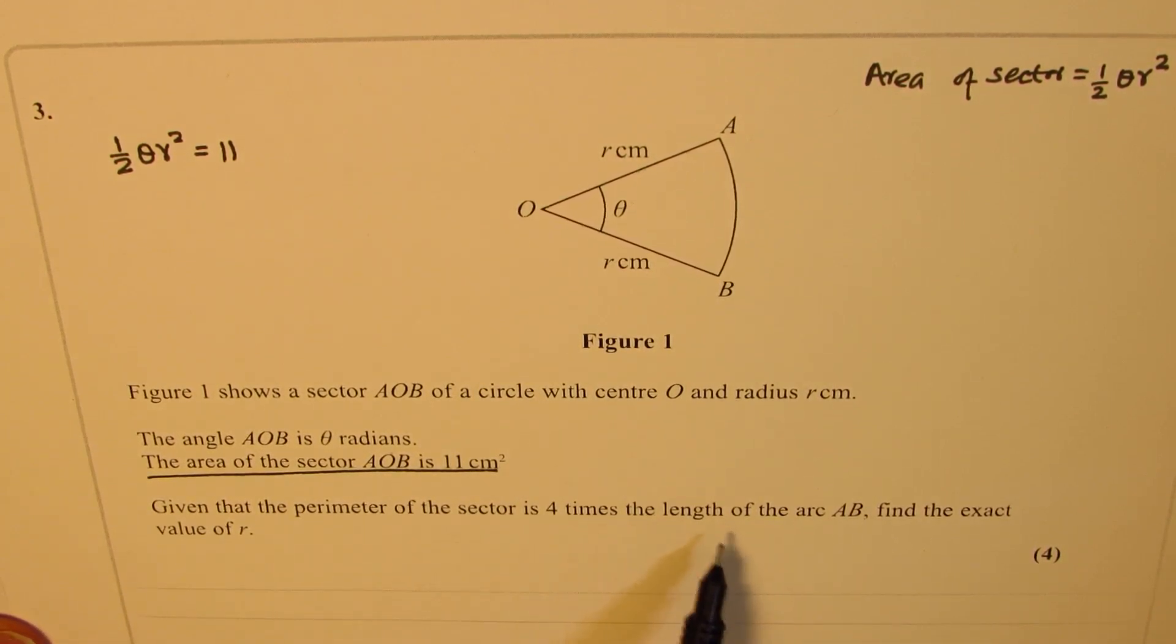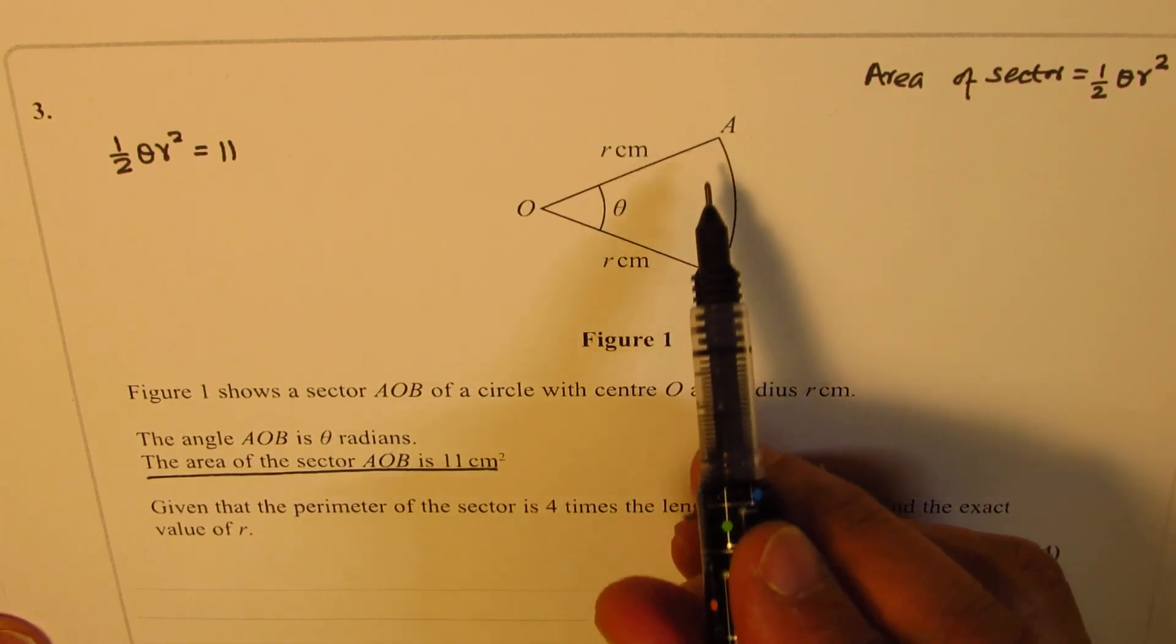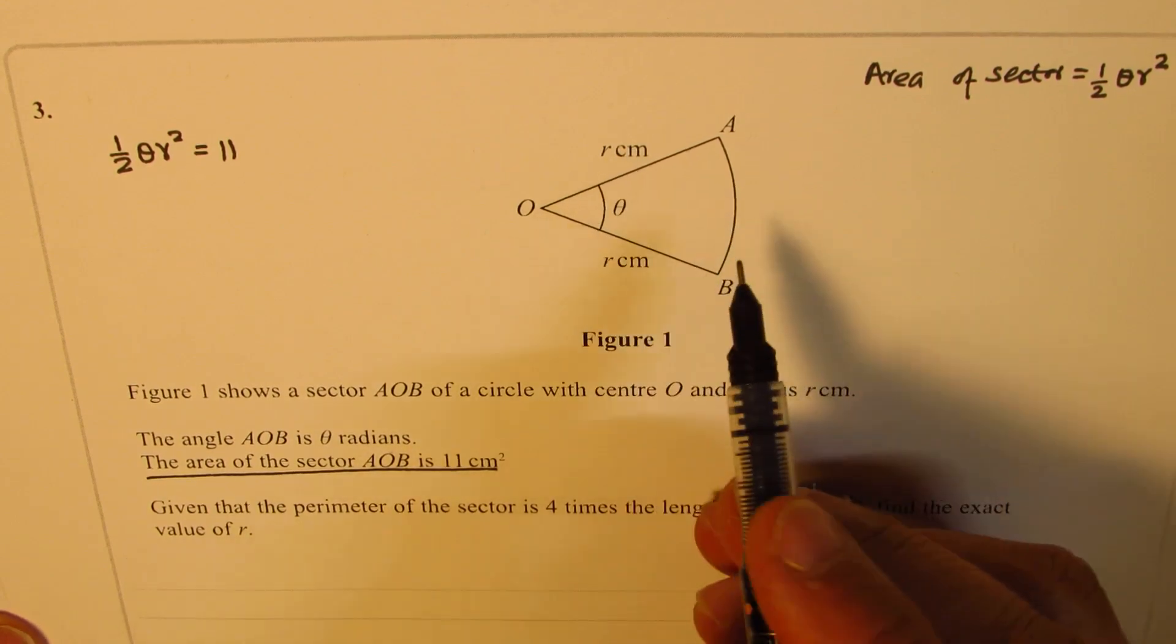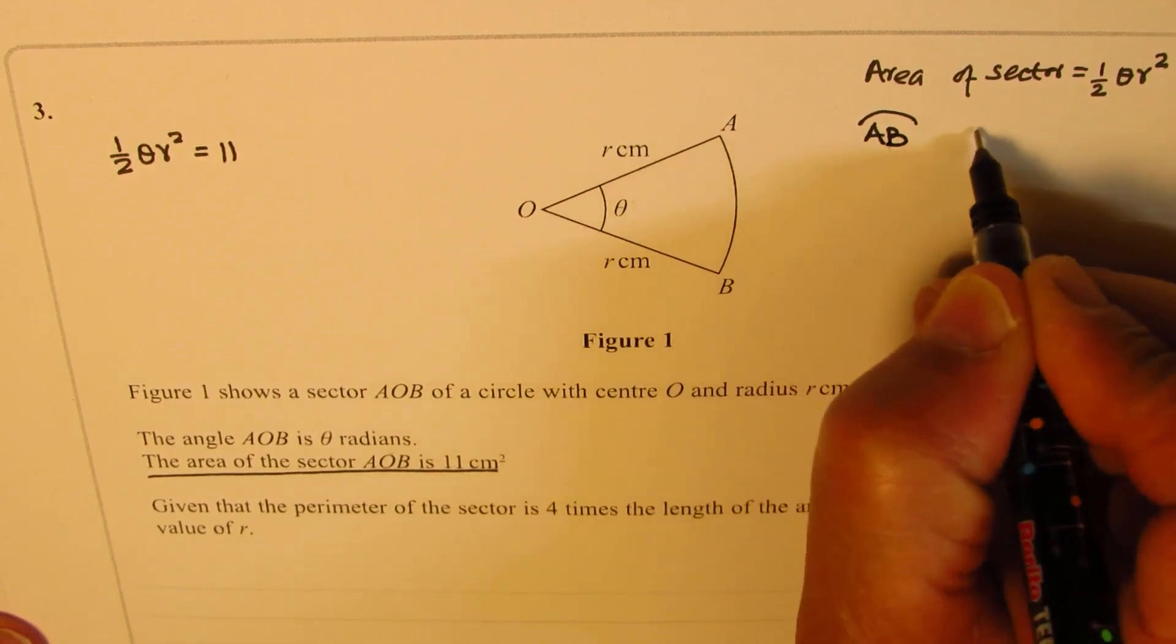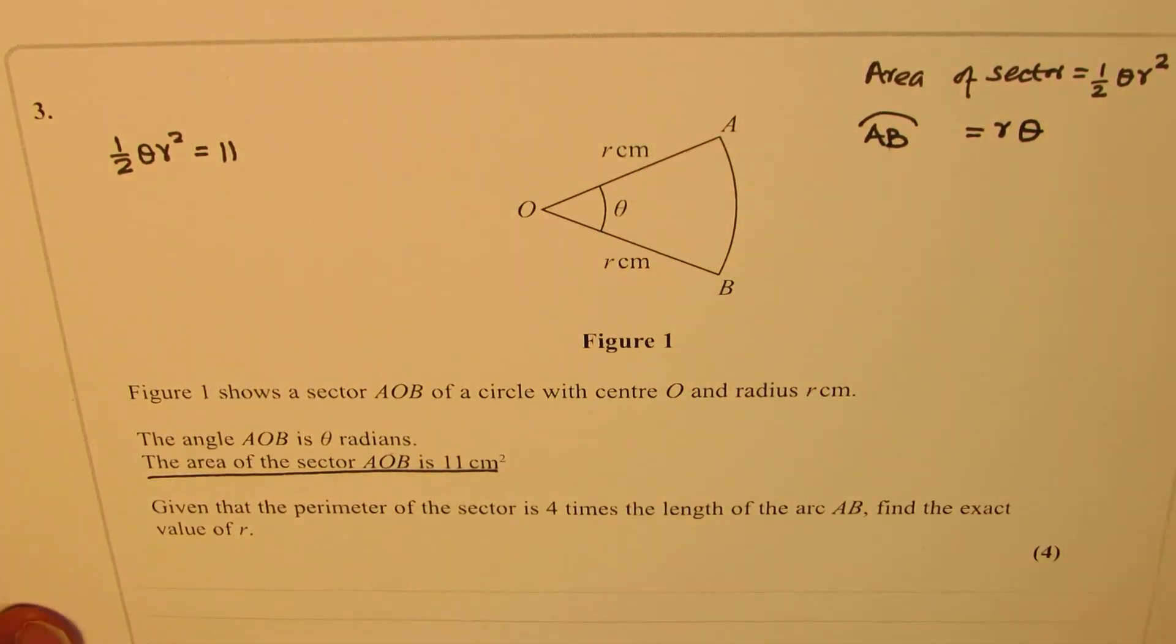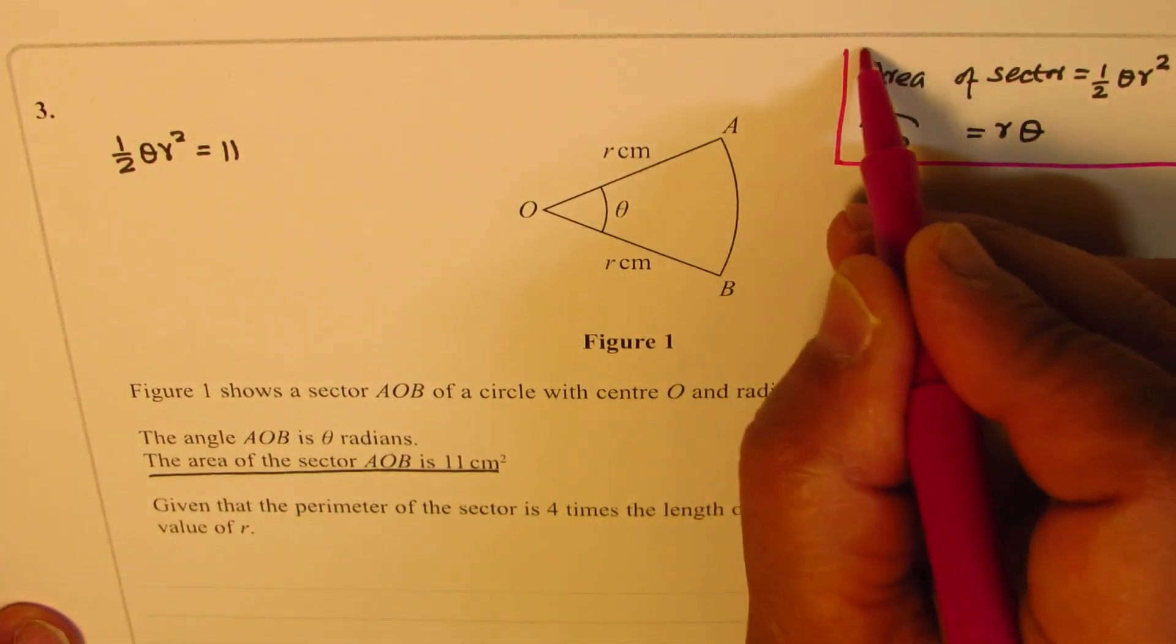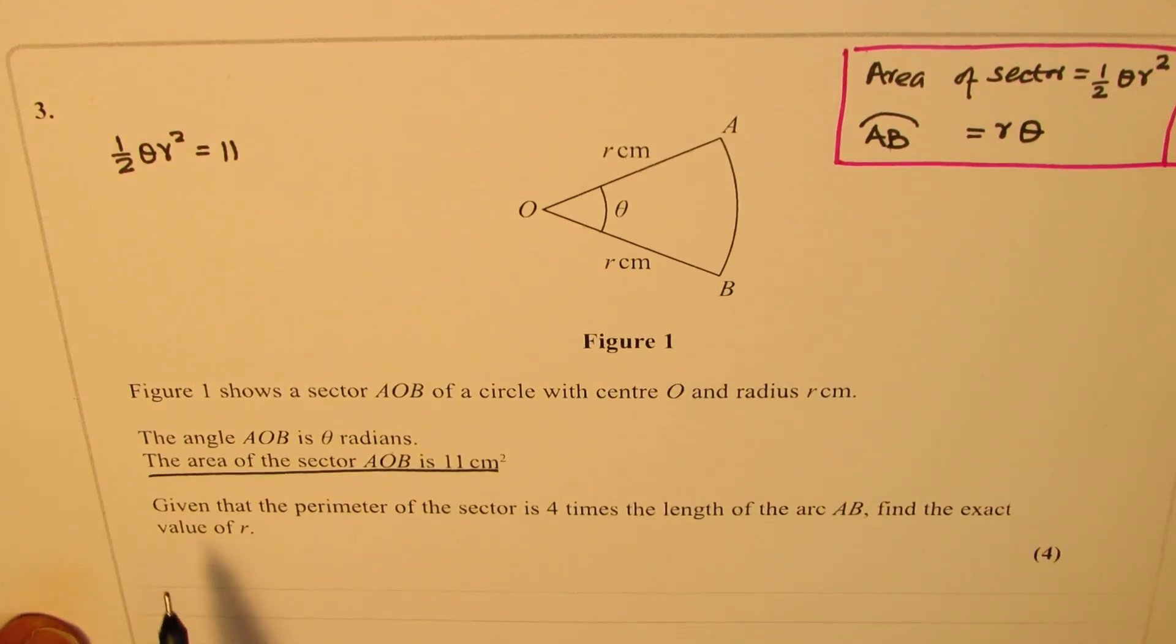Now how do you find AB arc length? In radians it is r times theta, so the arc length AB is r theta. These are very standard formulas which you should remember. Now let's continue. The condition given to us is that the perimeter of the sector is